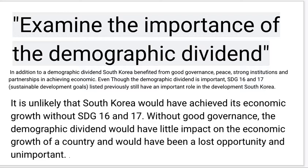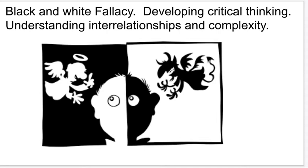Developing the spiral argument further, the student says it is unlikely that South Korea would have achieved its economic growth without SDG 16 and 17. Without good governance, the demographic dividend would have had little impact and would have been a lost opportunity. The student was careful not to fall into the black and white fallacy — that the demographic dividend is simply important or not important. It's a mixture of both. By avoiding that fallacy and using a spiral argument, you develop critical thinking skills and show the examiner you understand the relationships and complexities involved.